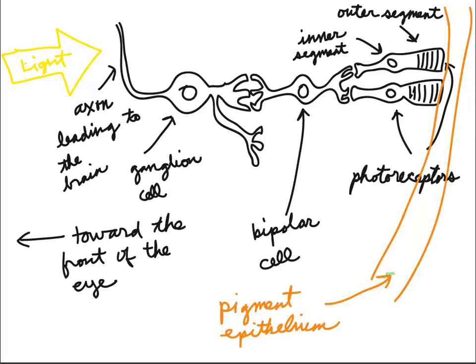We believe that the reason for this is the chemicals that are used in the photoreceptors have to be converted into a form that makes them sensitive to light again. We'll talk about that later. But that conversion takes place in the pigment epithelium.